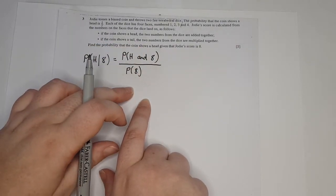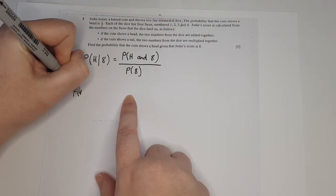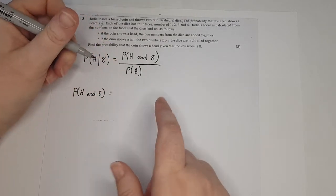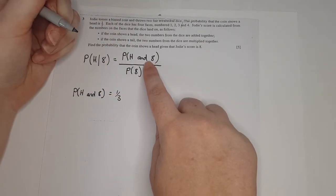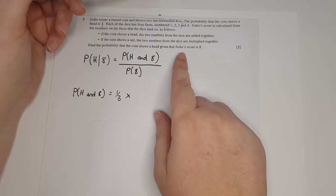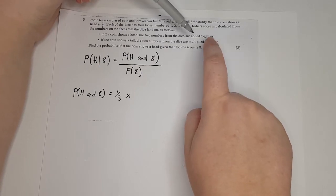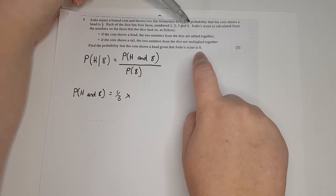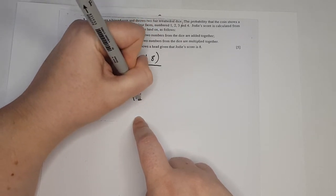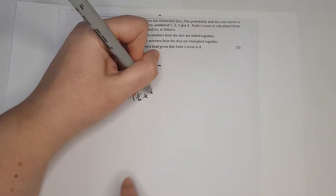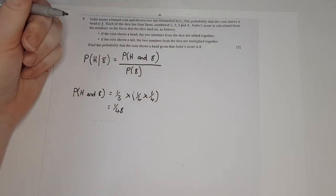Let's start with P(head ∩ score=8). The probability of getting a head is 1/3. When she gets a head, the two dice are added together, and the only way to get 8 is 4 + 4. The probability of getting a 4 on the first die is 1/4 and a 4 on the second die is 1/4. So that gives 1/3 × 1/4 × 1/4 = 1/48.